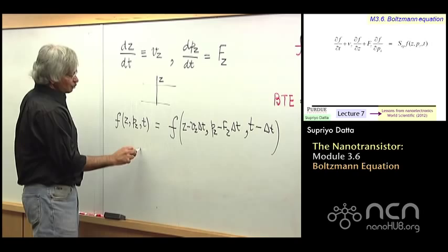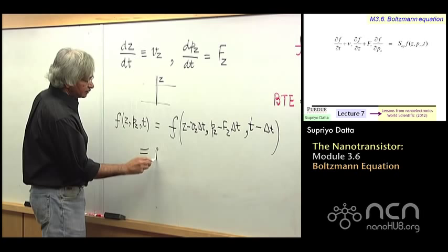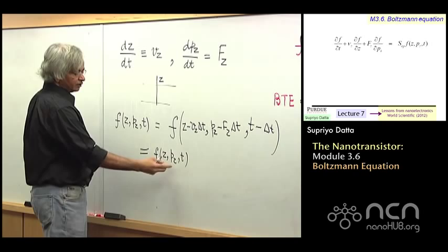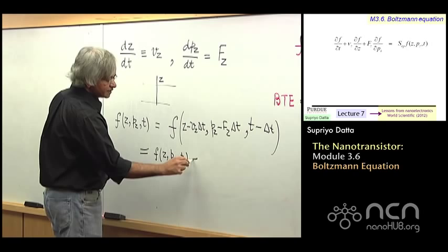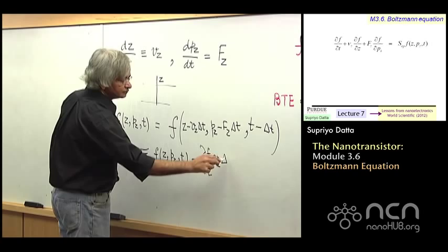And this is where you need to be familiar with partial derivatives. The idea that something like this can be written as f(z, pz, t). So this is the right, I am trying to write this right-hand side and we are saying this function is equal to what it is here minus the partial of f with respect to z times vz delta t.